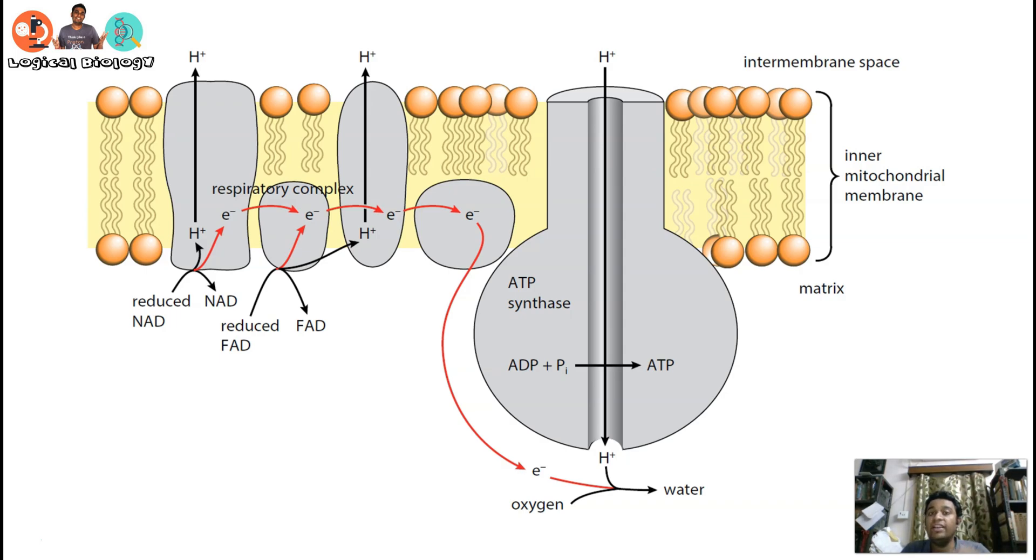These protons are having less amount of energy. Initially, before coming in, they had more energy. Where did all this energy go? These energies were given to the ADP and inorganic phosphate, as a result of which you form ATP.